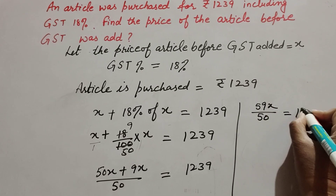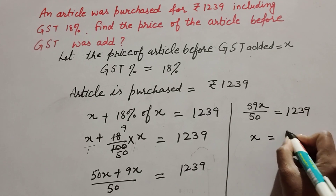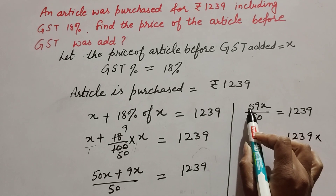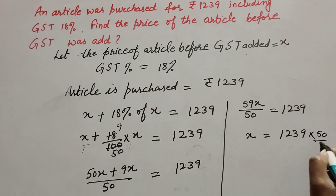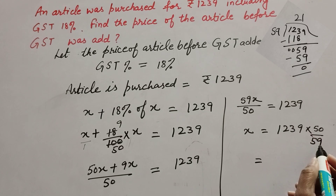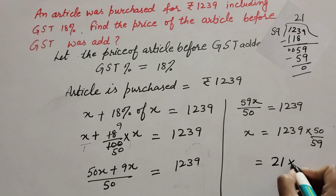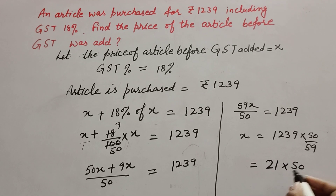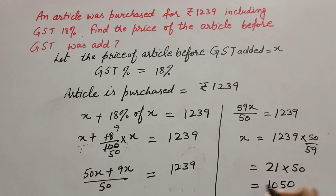So 59x over 50 equals 1239. Therefore x equals 1239 multiplied by 50 over 59, transposing the term to the right hand side by multiplying its reciprocal. 1239 divided by 59 gives 21, and 21 multiplied by 50 gives 1050.